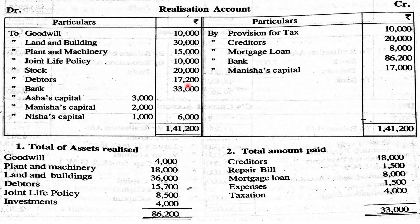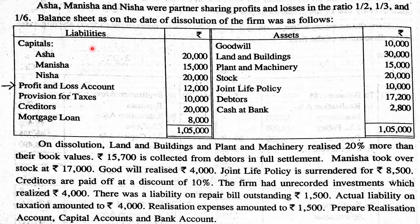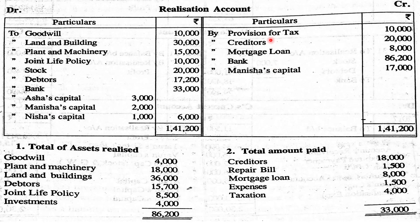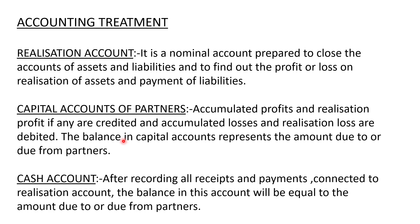The next step is closing liability accounts. Liabilities include provision for taxes, creditors, and mortgage loan. These liability accounts are credited to the realization account when closed.